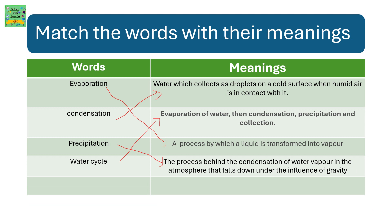Here is the correct answer. Evaporation means a process by which a liquid is transformed into vapor. Condensation means water which collects as droplets on a cold surface when humid air is in contact with it. Precipitation means the process behind the condensation of water vapor in the atmosphere that falls down under the influence of gravity. The water cycle's definition covers evaporation of water, then condensation, then precipitation, and then collection.